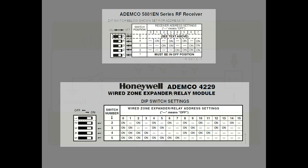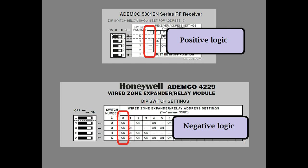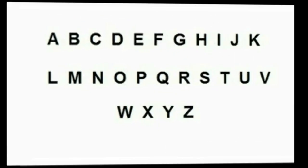Is there any way to tell which type of logic is being used when you look at a table like this? Surprisingly, the answer is yes. Look at the column labeled 0. If all of the switches are turned off, then you're dealing with positive logic. If you're looking at address 0 and all the switches are turned on, then you're dealing with negative logic. Well, that's about it for this video. In the next video, I'd like to discuss how the computer changes its 1s and 0s into a language that us humans can understand.